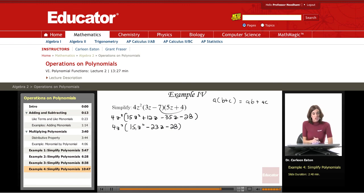So I applied the distributive property in here, multiplying each term in one times each term inside the other parentheses. Now, I need to apply the distributive property again to work with the 4z squared. And that's going to give me 4z squared times 15z squared plus 4z squared times negative 23z plus 4z squared times negative 28.